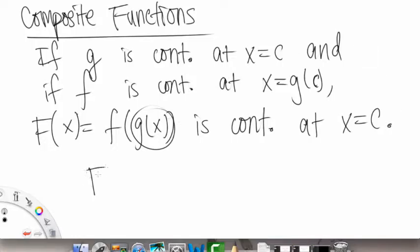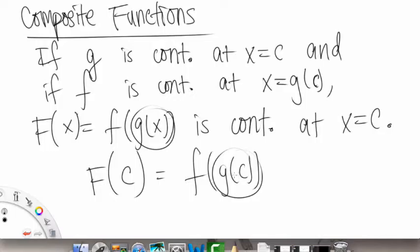Meaning that if we have capital F of c, that means that we have f of g of c. So the first thing, this was satisfied. g of c is definitely continuous because we know that g is continuous at x equals c. And then we also have the f, the outside function here. This is continuous at x equals g of c, so that's what's inside, so we're all good. So that's how composite functions work.